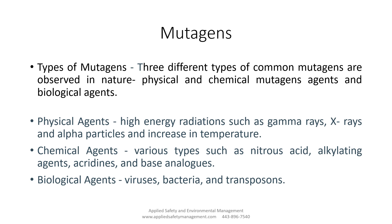When we think about physical agents, we have high energy radiation, gamma rays, x-rays, alpha particles, and all that. For chemical agents, we can think about nitrous acid, and we'll get into a whole list of different chemical agents. And for biological agents, we have viruses and bacteria.